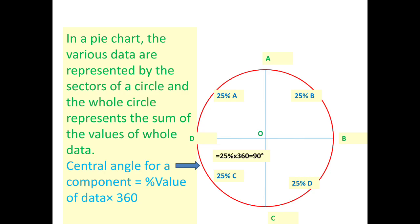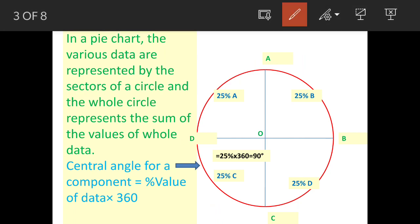Before we see the answer we will understand the pie charts. Now pie charts are basically a representation of data in a circle like this. This is a circle. Now whole circle represents sum of all the data.